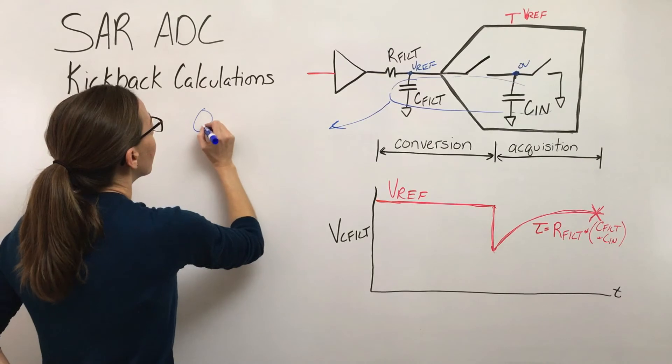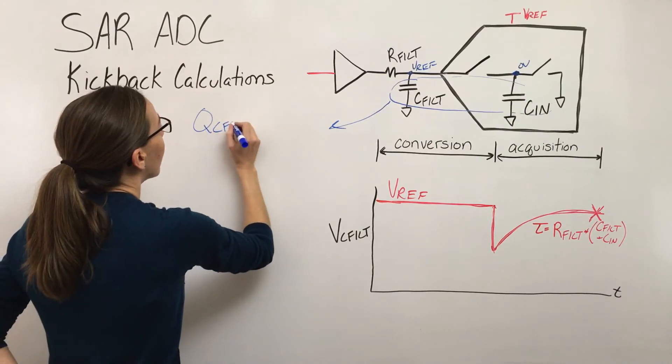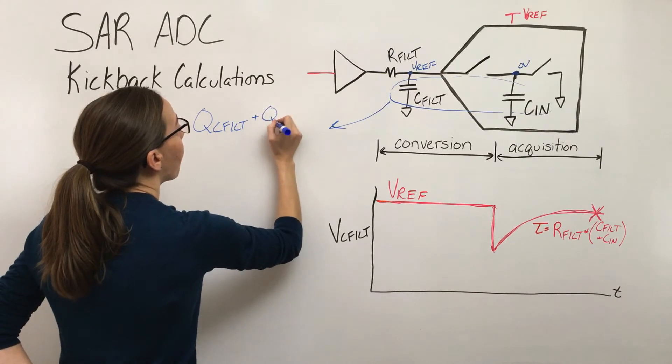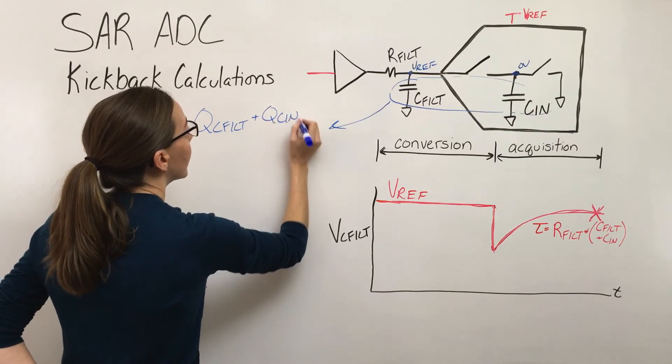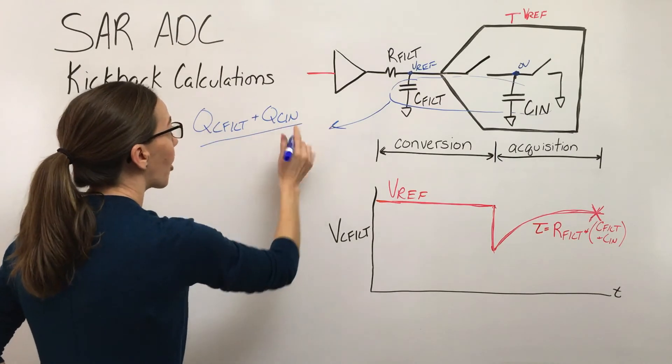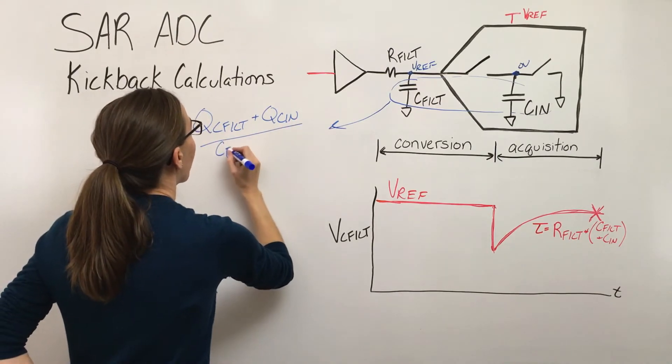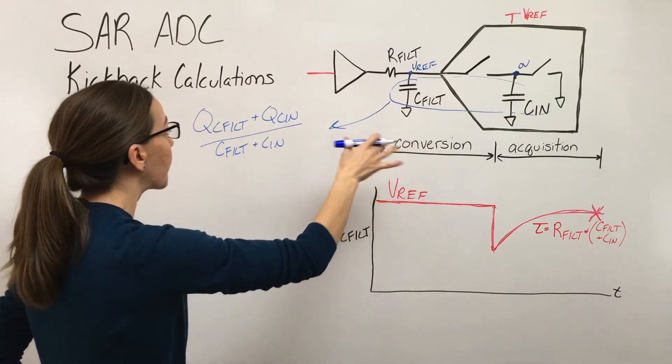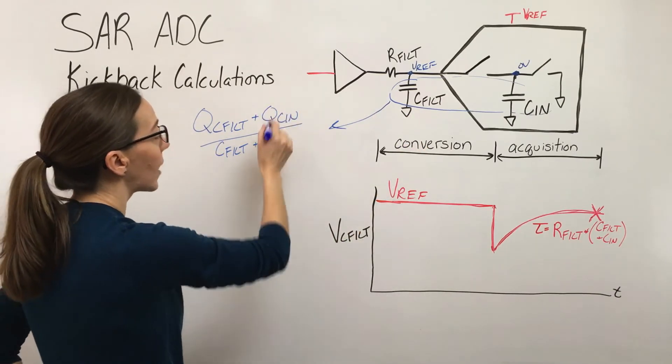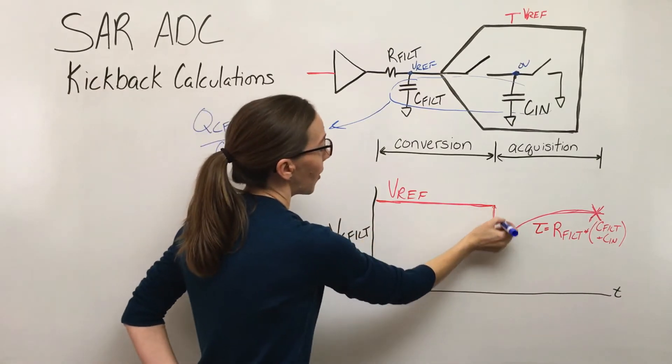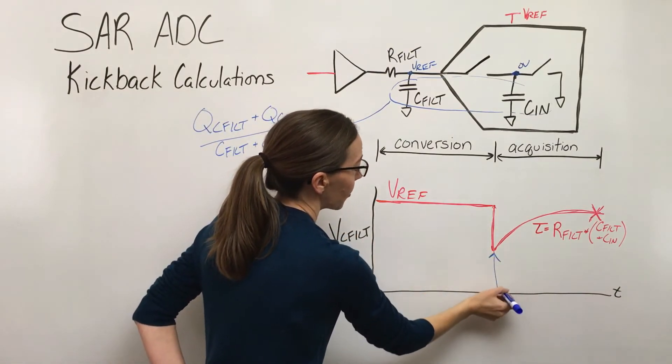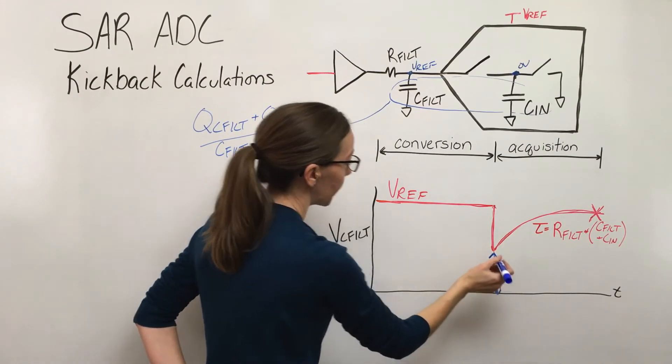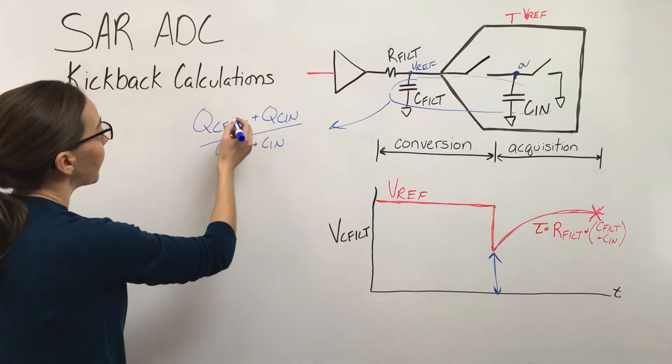Mathematically what that looks like is the charge on the filter capacitor and the charge on that sample capacitor - so that's the total charge. If we divide it by the total capacitance, that converts that charge back to a voltage. This gives us this number right here - the absolute voltage value when that switch closes.